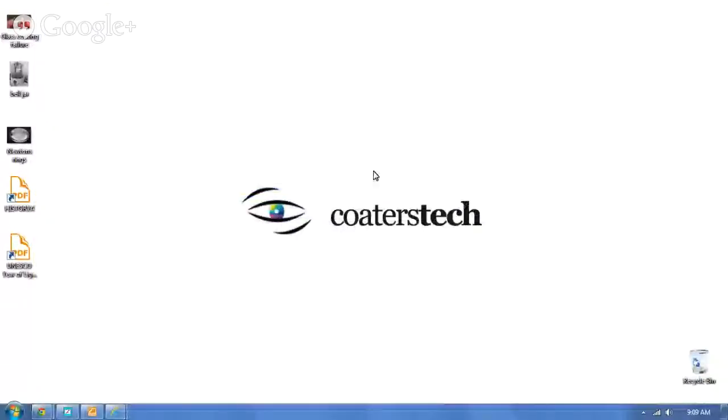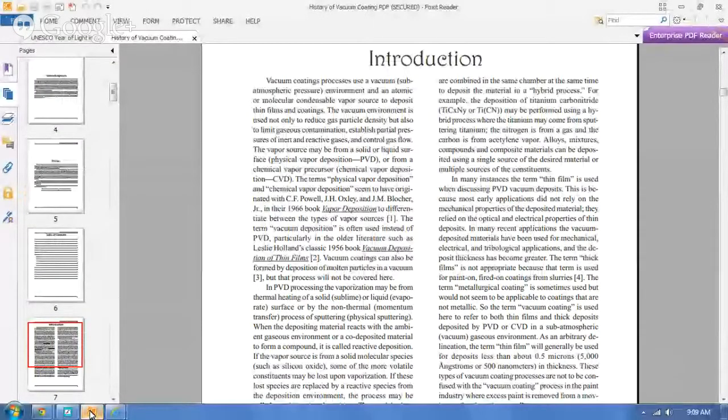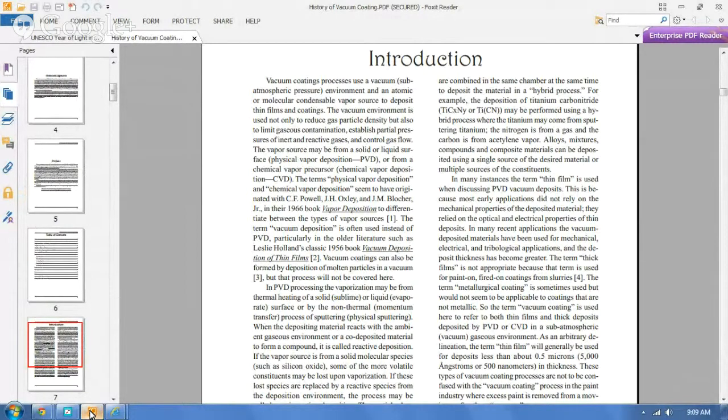And he has a book called History of Vacuum Coating. And History of Vacuum Coating was written a few years ago, but it also starts off with an introduction to vacuum coating. And as you can see here, there's some, it starts off with the definitions of CVD and PVD, and what those mean, and how they were brought about, and when they were brought about.